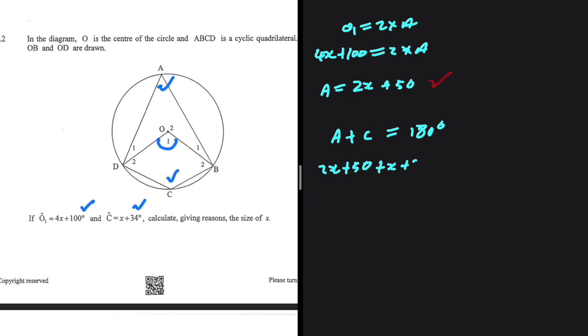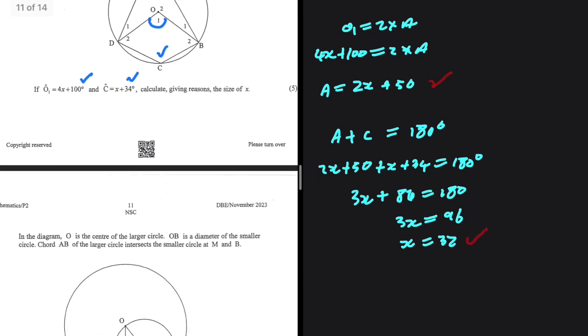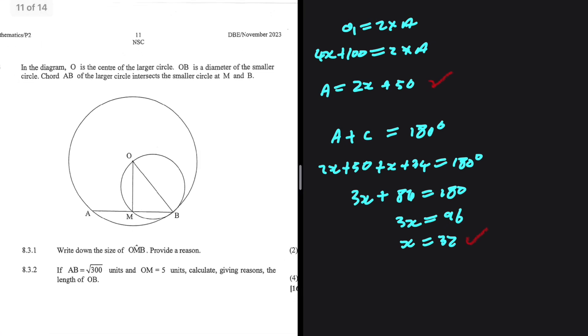So 2x plus x, that is 3x; 50 plus 34, that is 84; this equals 180. So 3x equals 180 minus 84. I think it should be 96, but I'm not going to take any chances. I'm going to put it in my calculator. Yeah, it is 96, and then 96 divided by 3, that is 32. So I'm getting x equals 32 degrees.